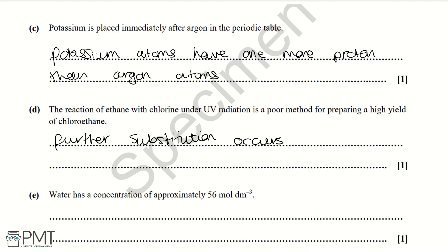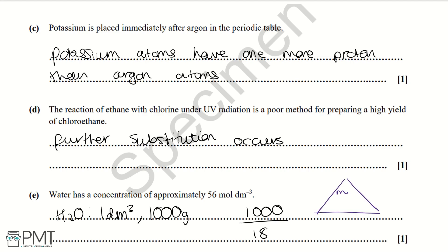Part E: water has a concentration of approximately 56 mol/dm³. With approximately 1 dm³ of water weighing 1000 g, we divide 1000 by 18 (the relative formula mass of water) to get approximately 56 moles. Then concentration equals 56 divided by 1, giving 56 mol/dm³. To get the mark, correctly work out the moles of water and state the concentration is 56 mol/dm³.